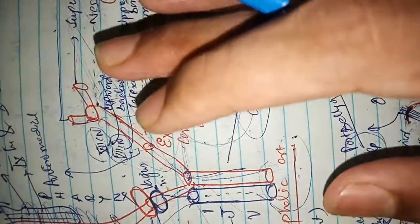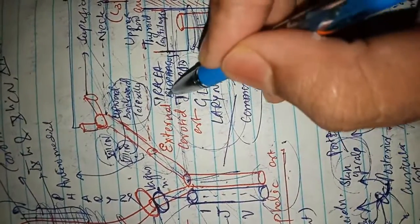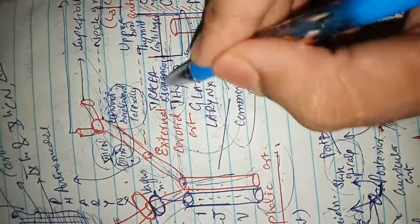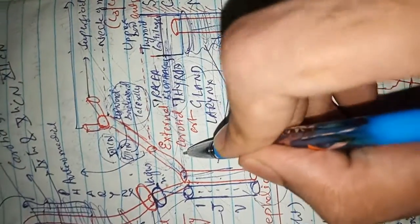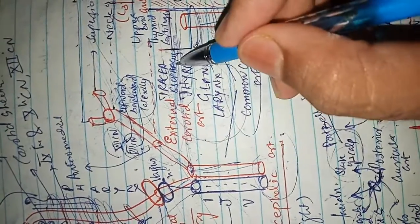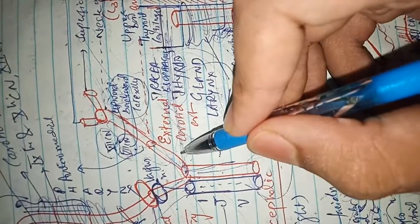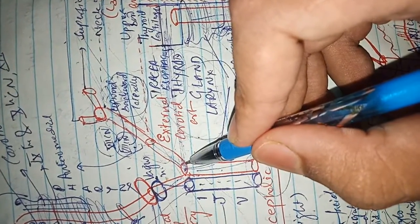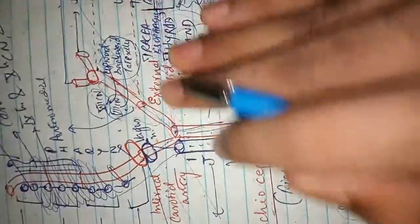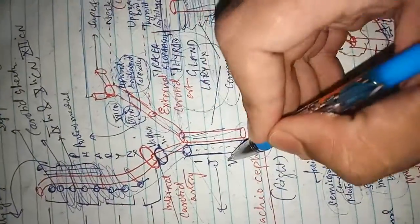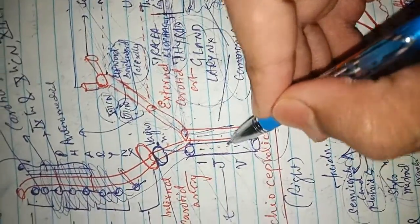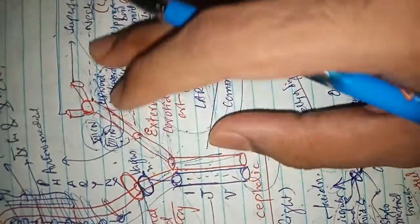Anteriorly, it is crossed by superior belly of the omohyoid at the level of cricoid. At the level of the cricoid, the thyroid cartilage, below there is the cricoid. So at the level of the cricoid, that is before the bifurcation, it is crossed by superior belly of the omohyoid. Below the omohyoid, the artery is deeply covered by the sternocleidomastoid, anterior jugular vein, sternohyoid, sternothyroid and middle thyroid vein.